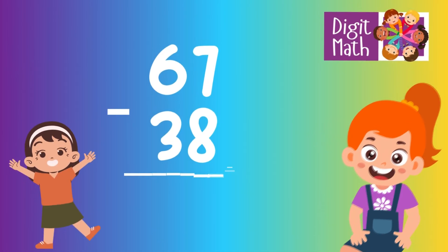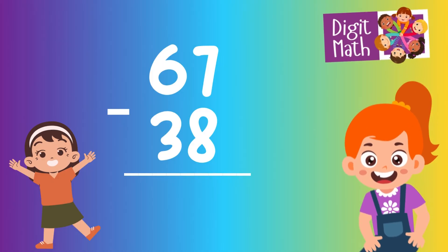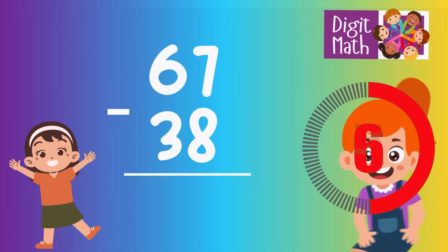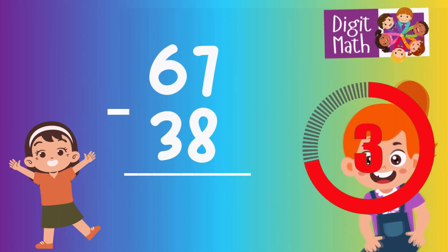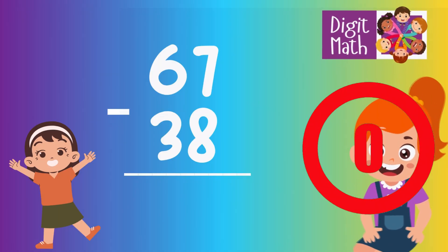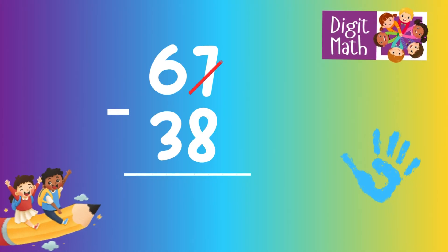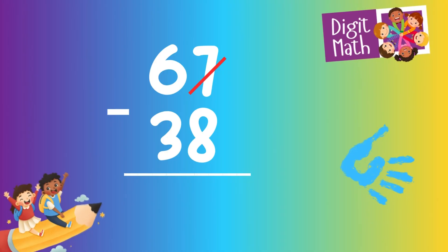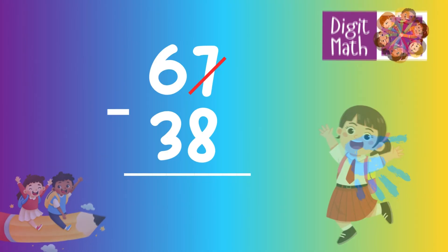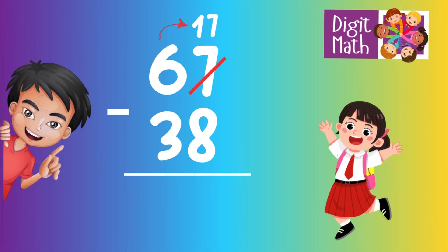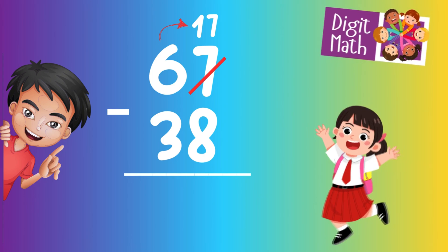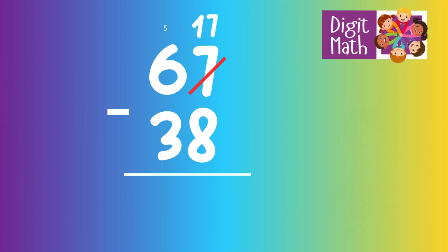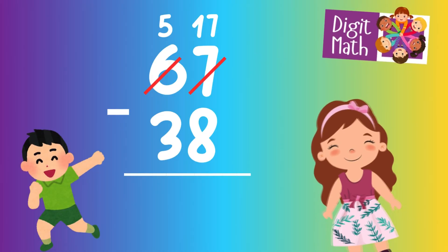67 minus 38 is... Time to think. Let's go to the answer. In the Units column, we have 7 minus 8. Since it's not possible to subtract 8 from 7, we need to borrow from the Tens column. In the Tens column, we have 6. We take 1 from the Tens, leaving 5 in the Tens column and turning the Units column into 17.